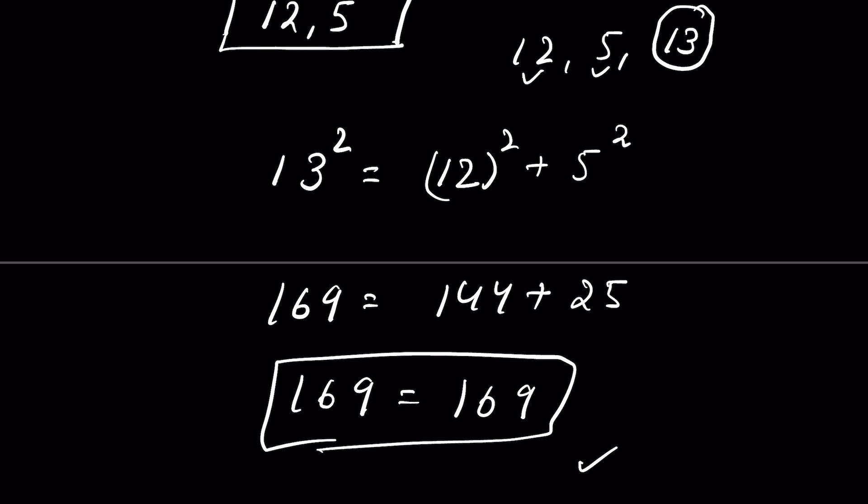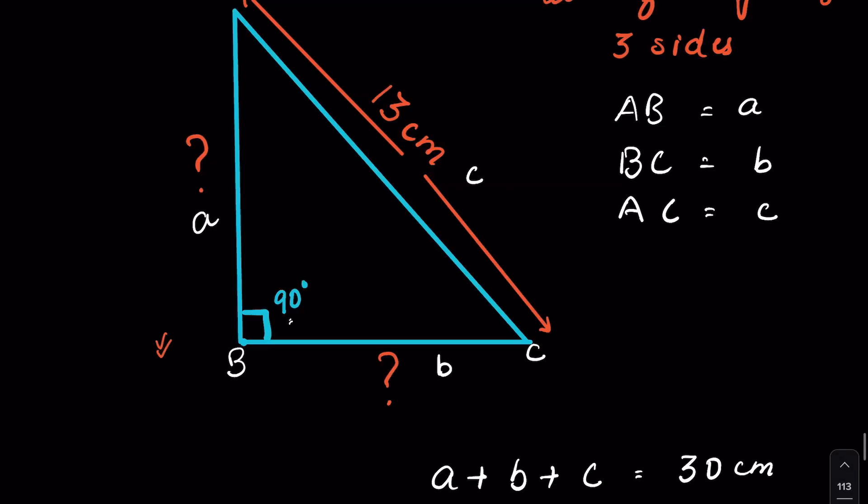Hence our answer is correct. Therefore, the two sides are 12 and 5. Either b = 12 and a = 5, or a = 12 and b = 5. Either combination satisfies the question. Thank you for watching.